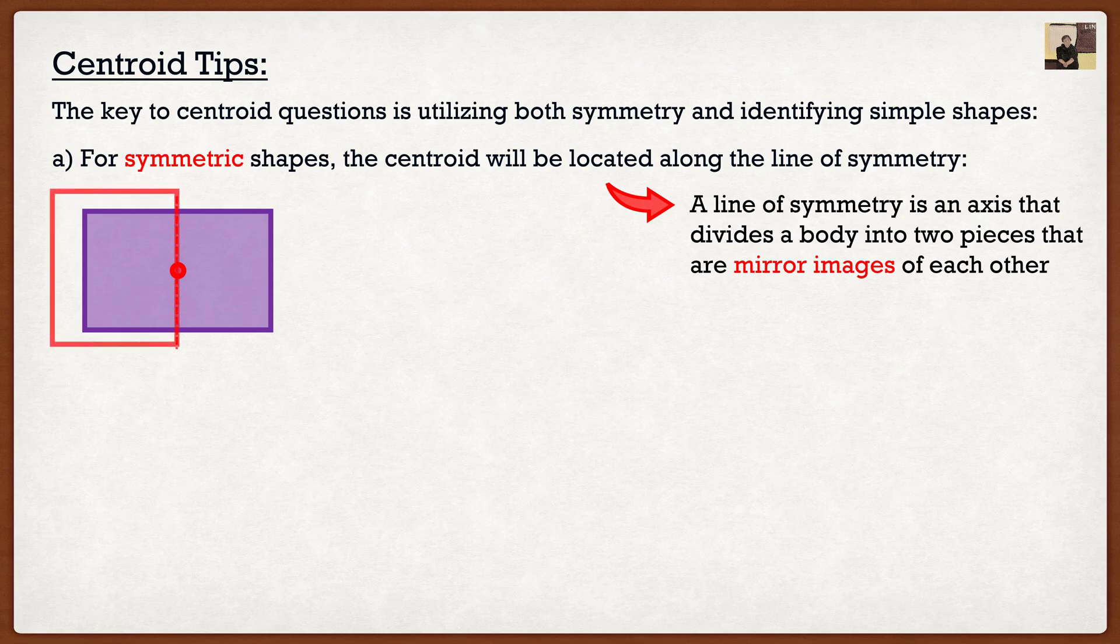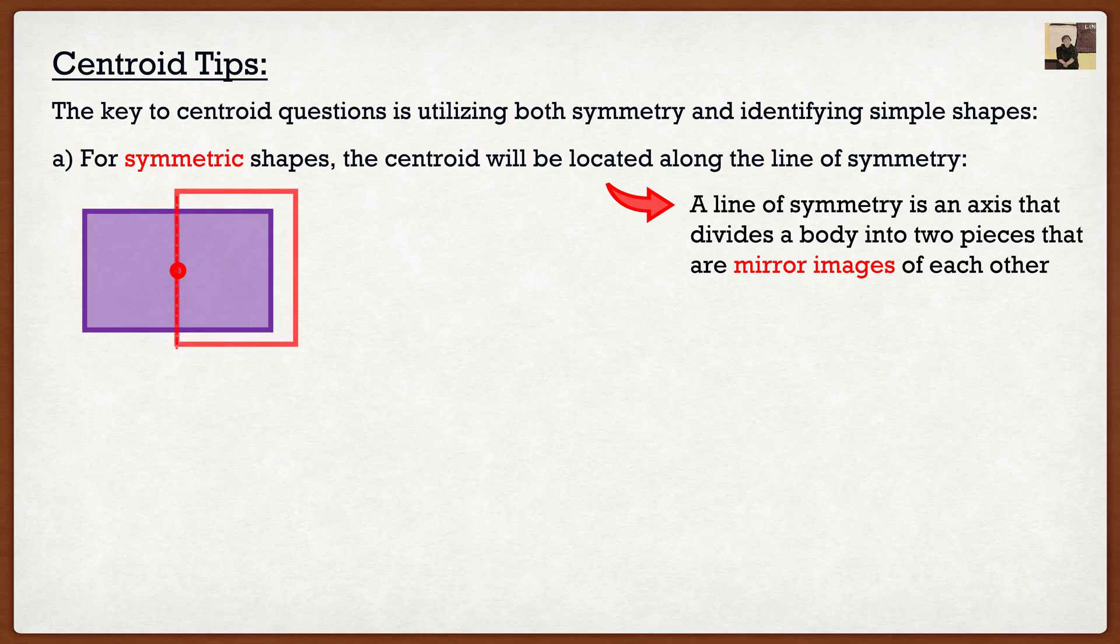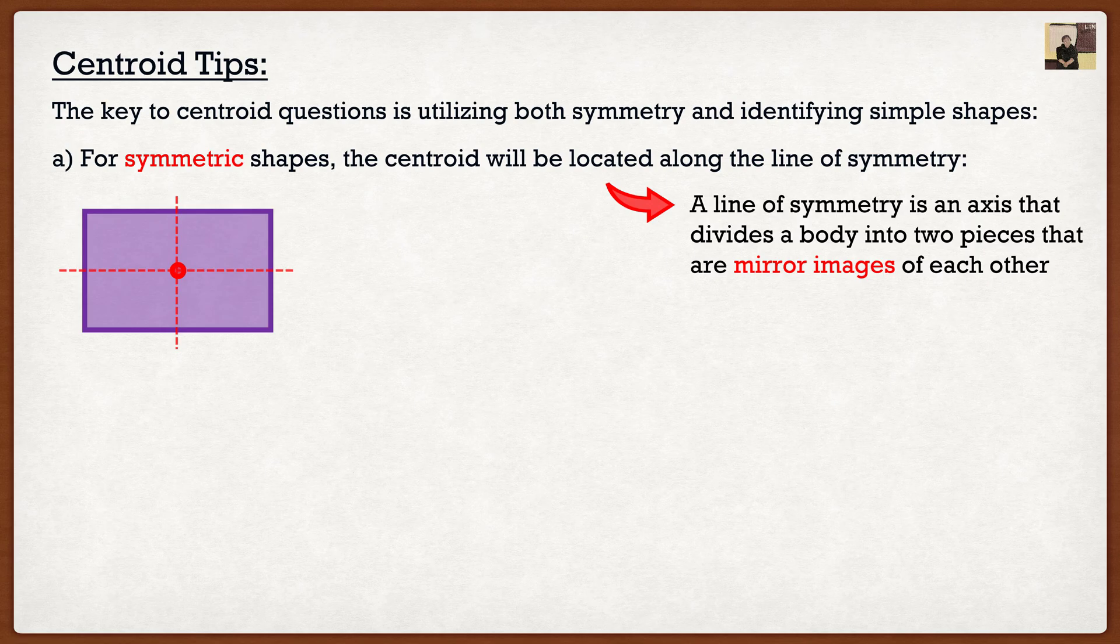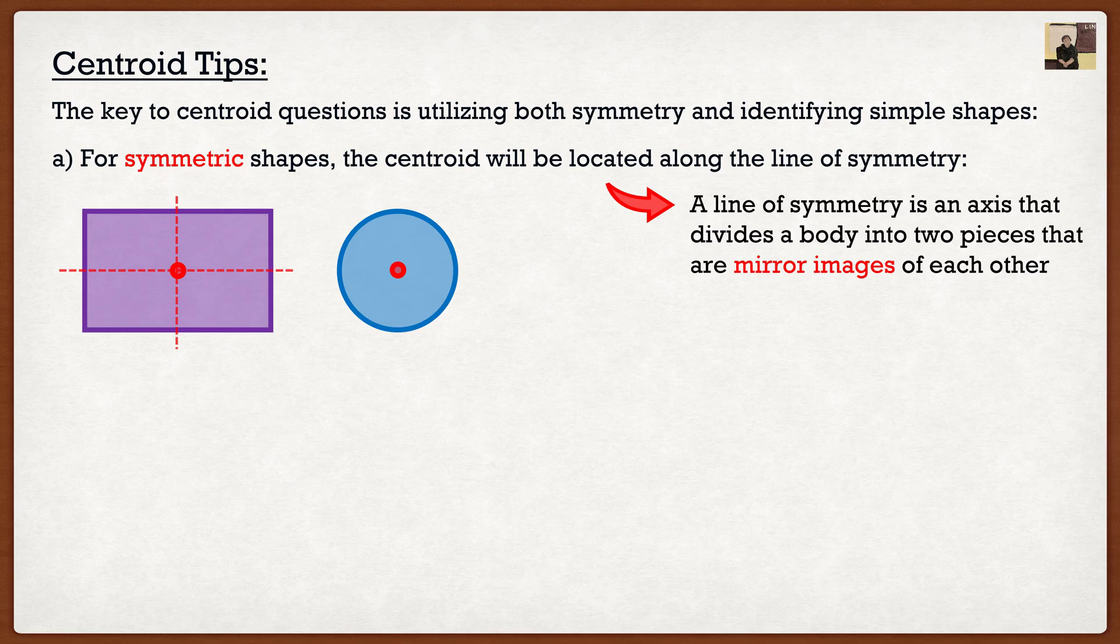If I were to look at my rectangle and I were to draw a vertical line, we can see that the piece on the left and the piece on the right are the exact same. They're mirror images. So we know that our centroid has to be similar along that vertical axis. If I were to do the same thing for a horizontal line, we get the same result. So in this case, we know where our centroid is. It's right at the center. I can repeat the same process for a circle. Again, we know that the circle, it's right at the center. And if I were to draw a vertical line, again, we have two mirror images. And if I were to draw a vert or sorry, a horizontal line, again, we have those two mirror images.